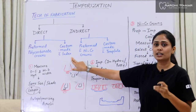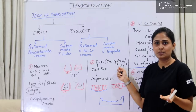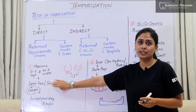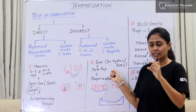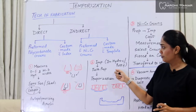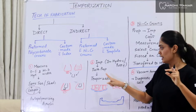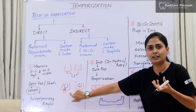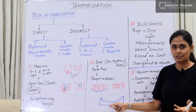The next direct method is custom made with index. Here, we first take an impression with putty or irreversible hydrocolloid material, and then prepare the tooth — similar to what we did before, where we do not prepare the tooth before taking the impression. The tooth remains intact with natural dimensions when the impression is taken. Then we prepare the tooth, making it smaller, and use that impression as our index. Previously we used a polycarbonate crown as the index; here we use the impression as the index.